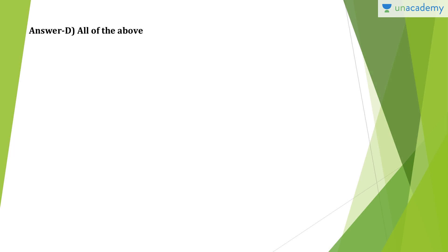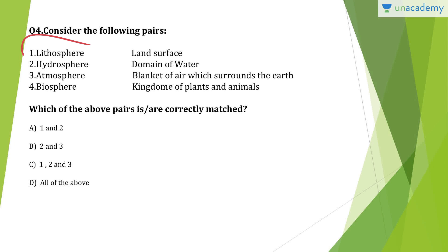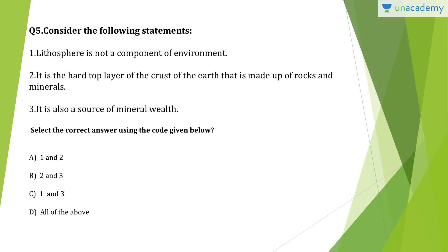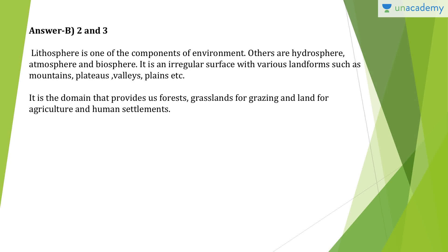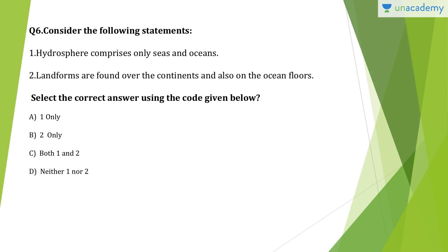Litho means land, hydro means water, atmo means surroundings, bio means life — all these statements are correct, so answer is D. Question 5: 'Lithosphere is not a component of environment' — that is wrong. It is the hard top layer of the earth's crust made up of rocks and minerals, and it is also a source of mineral wealth. Lithosphere is very much a component of the environment. The important components include lithosphere, hydrosphere, atmosphere, and biosphere. Question 6: Hydrosphere comprises only seas and oceans — that is wrong. Hydrosphere includes all water bodies: ponds, lakes, seas, rivers, oceans. Answer is B, two only. Landforms are found over continents and also on ocean floors — that is correct.